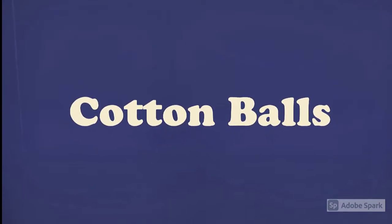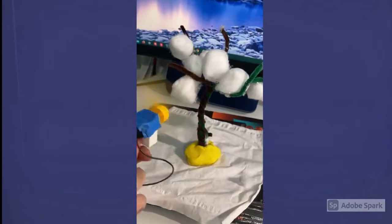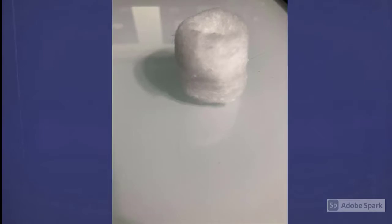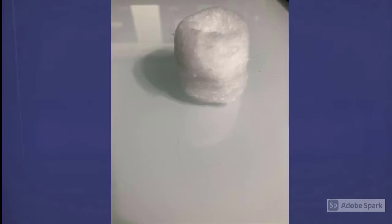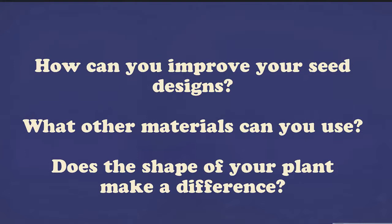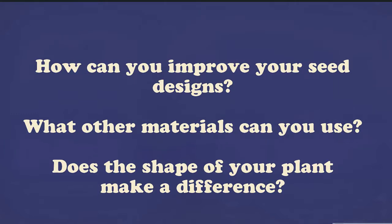Let's try a different shape for our seeds — this time we'll be using cotton balls. What do you think will happen when the fan blows on them? Will they fly far? Take a look at the cotton balls on the tree and see what you think. How do you think the shape affected the way they moved? I have some thinking questions for you: How can you improve your seed designs? What other materials can you use? Does the shape of your plant make a difference? Think those questions through and try your best to make a design that allows for seeds to fly far away.